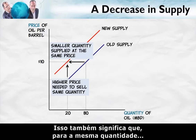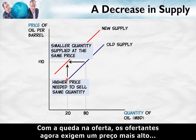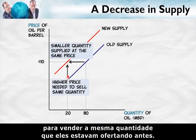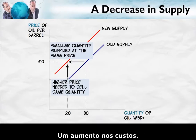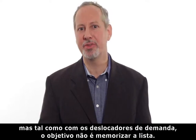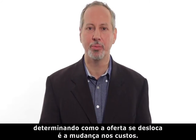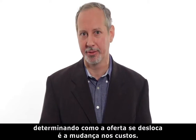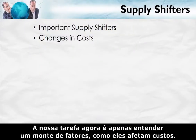It also means that at the same quantity, suppliers now require a higher price to sell that quantity. With the decrease in supply, suppliers require a higher price to sell the same quantity they were supplying before. What would make suppliers require a higher price to sell the same quantity? An increase in costs. The major factor determining how supply shifts is a change in costs — an increase in costs reduces supply, and a decrease in costs increases supply. Our task is really just to understand how a whole bunch of factors change costs.